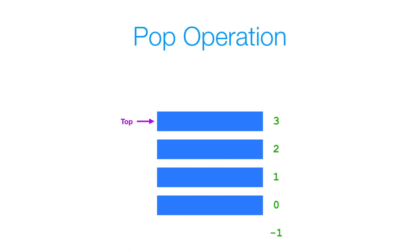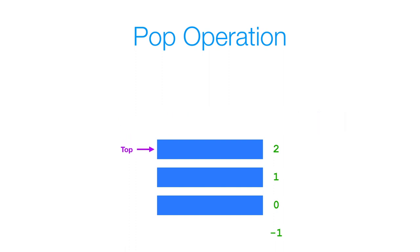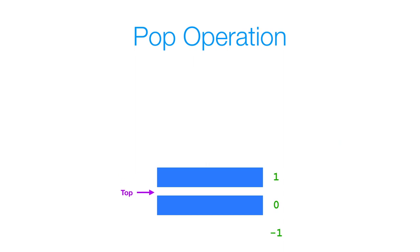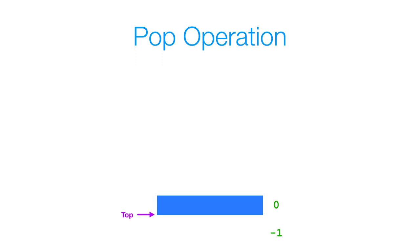Now let's look at a pop operation. Popping an element off the top of our stack is synonymous with removing an element from the top of our stack. If we remove the top element, our top will now be at index 2. If we remove another element, our top will now be at index 1, then index 0. And if we remove the last element from our stack, our top will be set to negative 1.